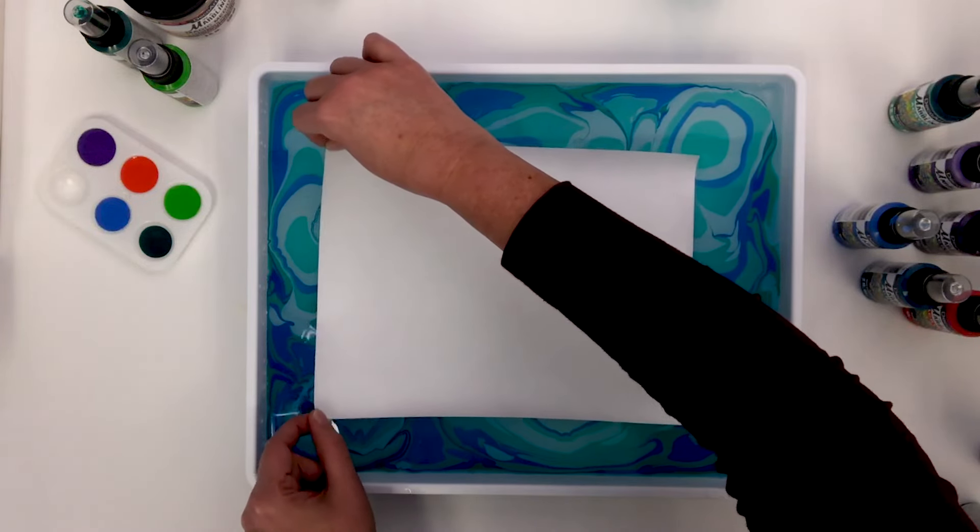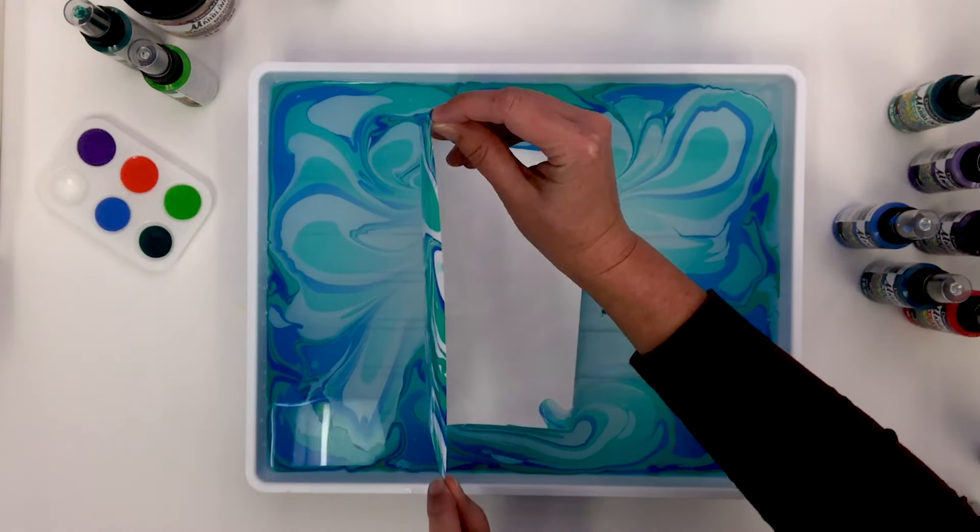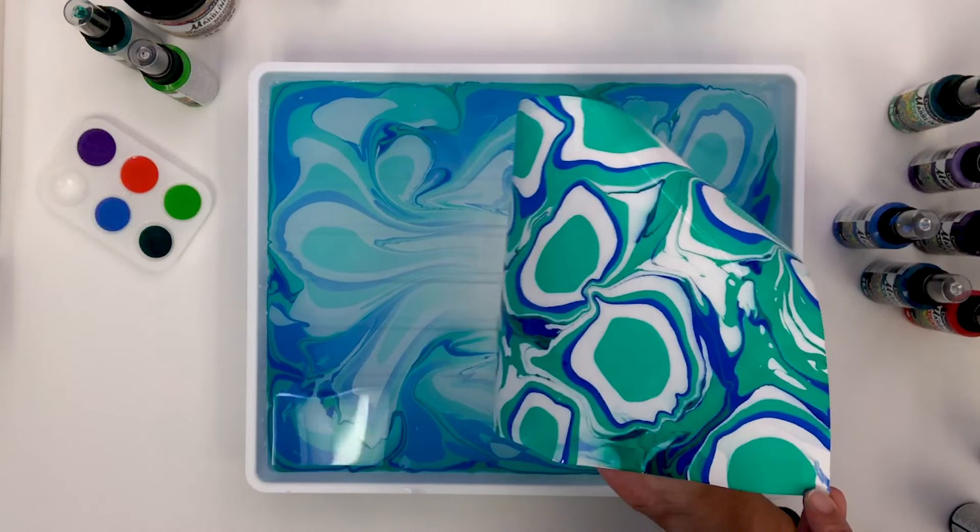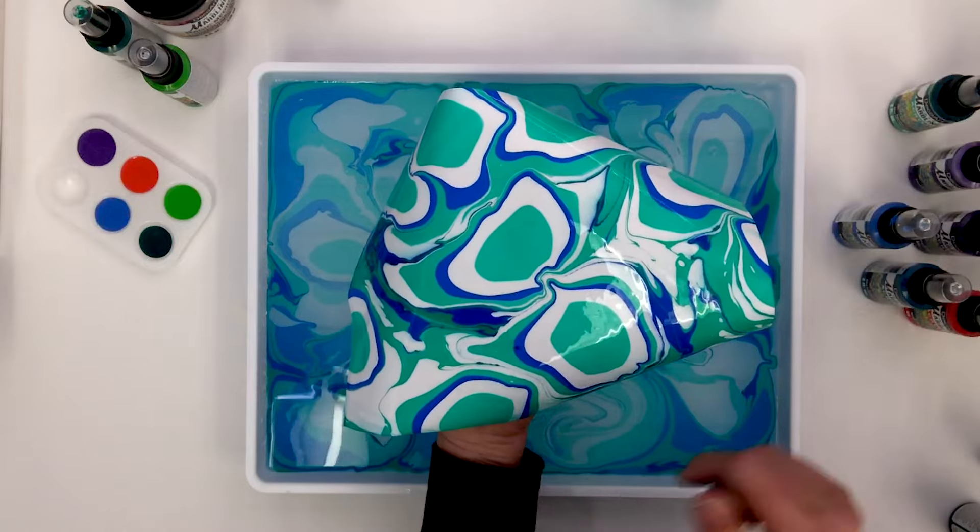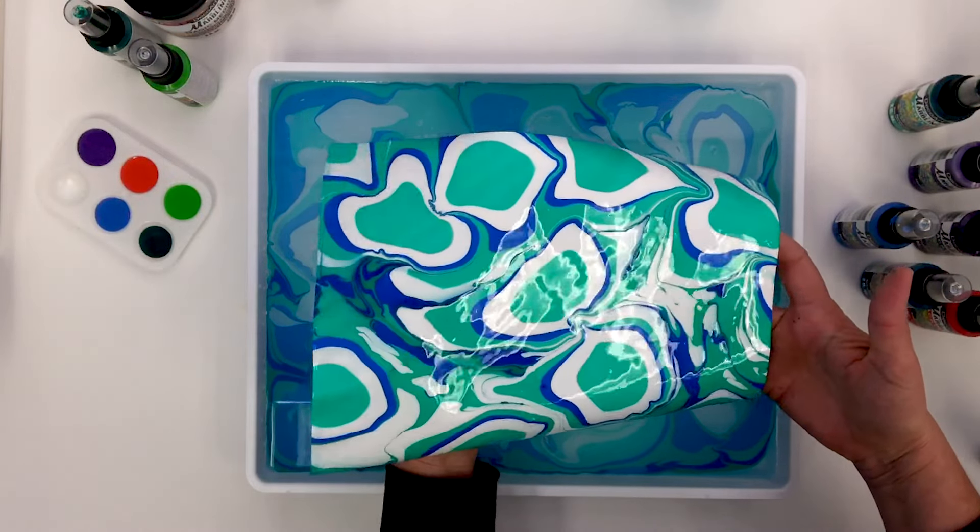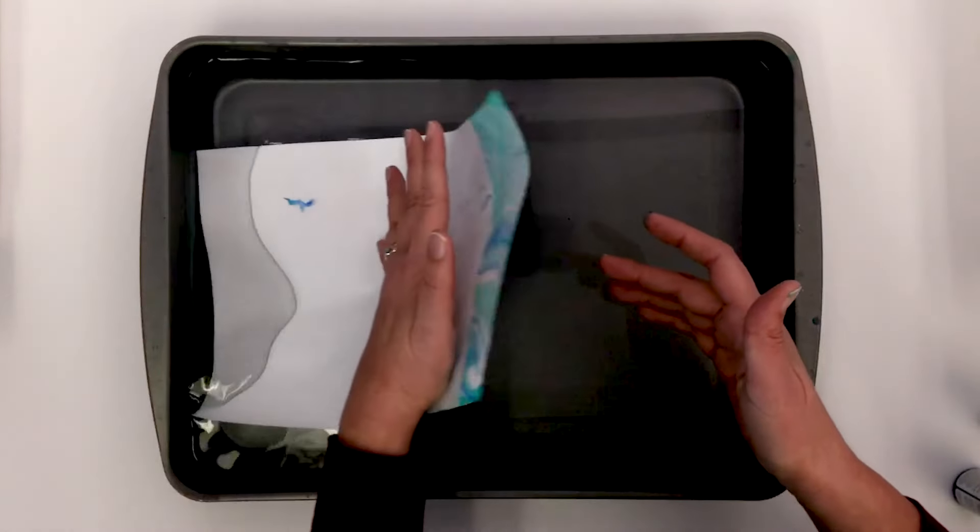To remove, gently grab the corners and in a smooth motion, pull the print out of the bath, careful not to smudge it. It takes practice to get the hang of dipping paper, so give yourself some grace if your first attempts are a little awkward. Rinse it immediately in your rinse tray.